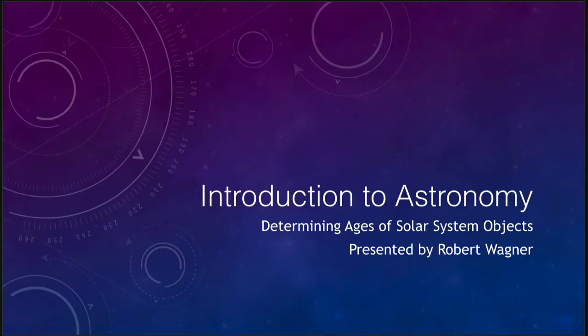Greetings and welcome to the introduction to astronomy. In this lecture we are going to discuss determining ages of solar system objects. So how do we figure out how old something is in the solar system?